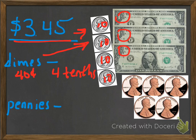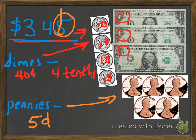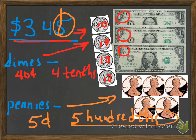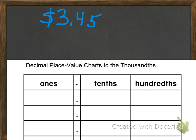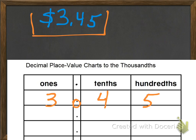Same thing with the pennies. We have 5 pennies, so we have 5 cents. And because it's in the hundredths place, we have 5 hundredths of a dollar. So in other words, we have our 3 dollars and 45 cents: the 3 goes here — we have 3 ones — here's our decimal, and we have 4 tenths and 5 hundredths.